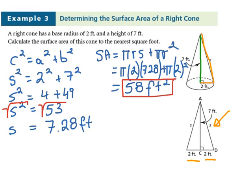Remember that you still have to find the slant height for this to work, for you to find the surface area of a right cone. Let's take a look at one more example.